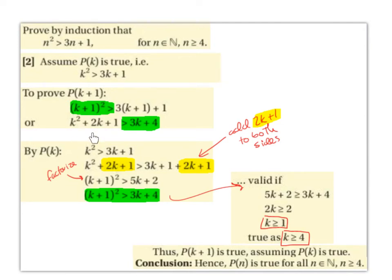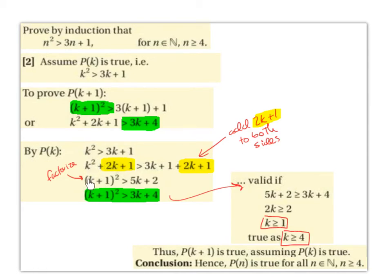From our assumption k² > 3k+1, we add 2k+1 to both sides: k²+2k+1 > 3k+1+2k+1. The left-hand side, k²+2k+1, factorises to (k+1)². The right-hand side: 3k+2k = 5k and 1+1 = 2, giving 5k+2. So (k+1)² > 5k+2.